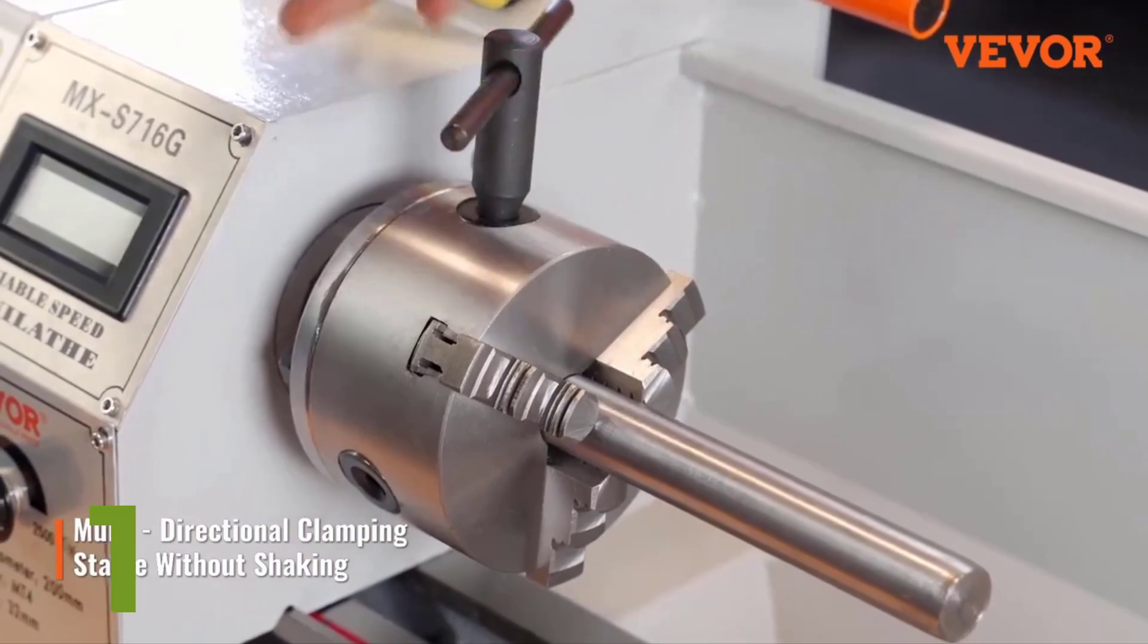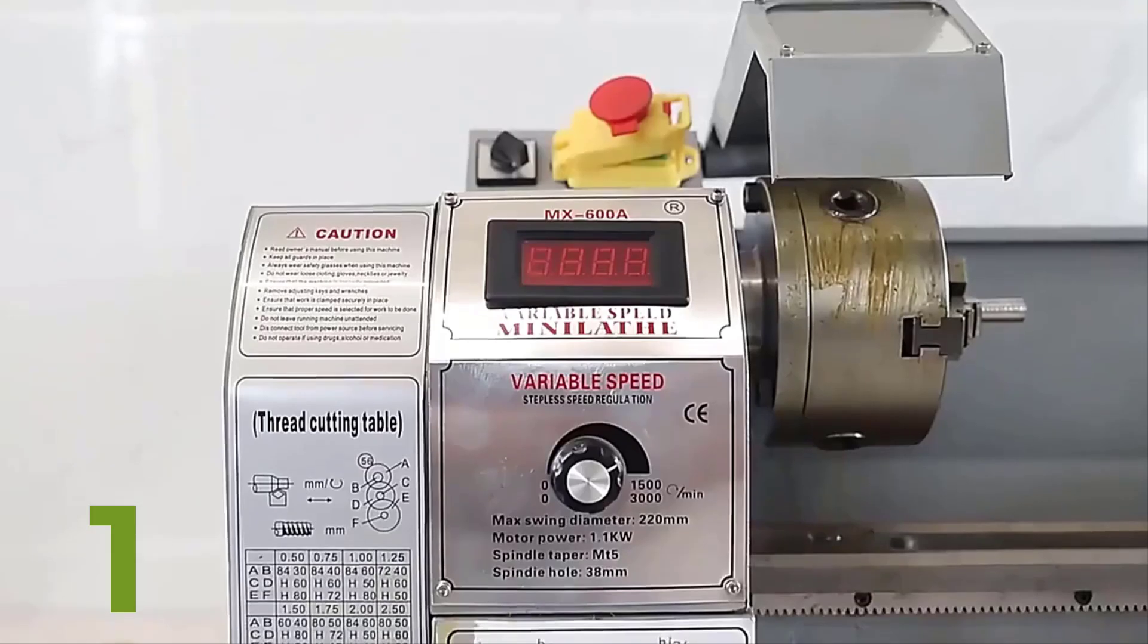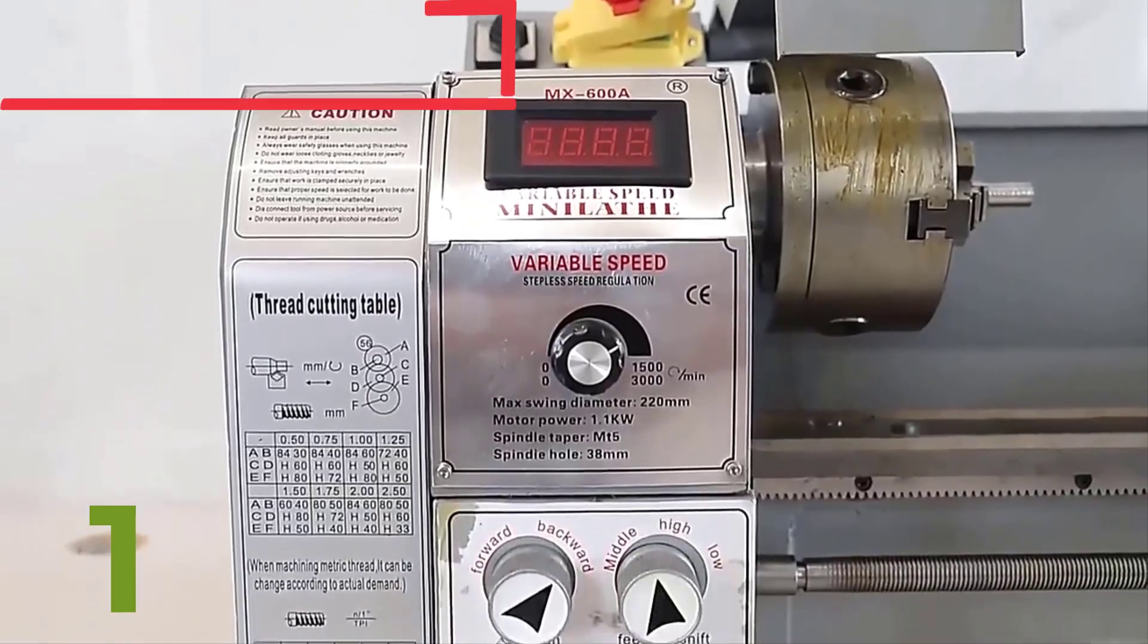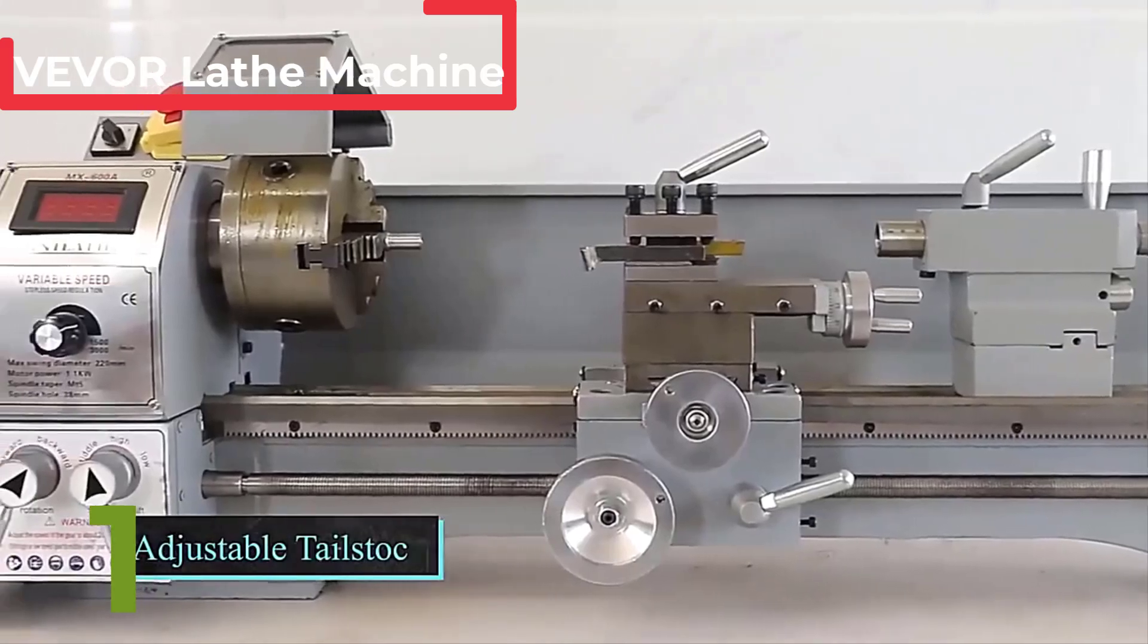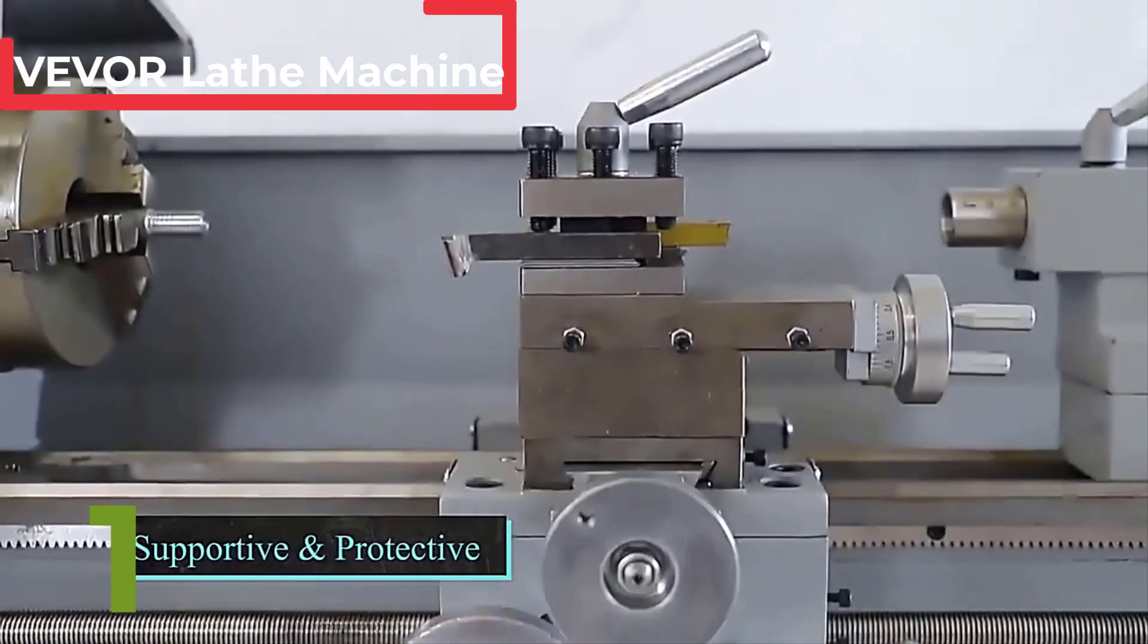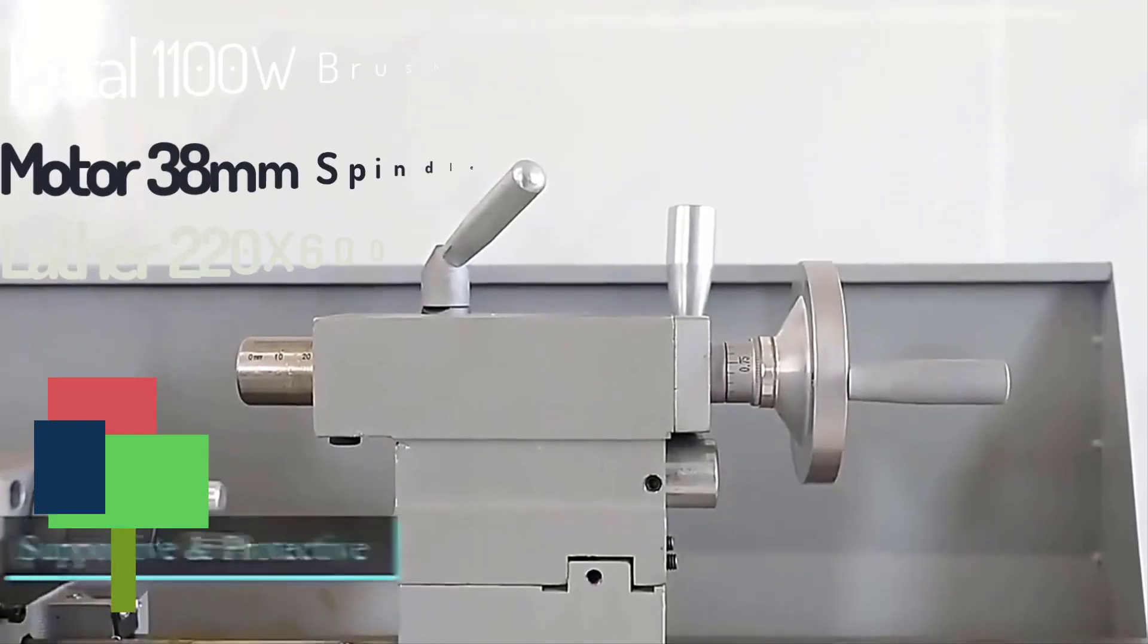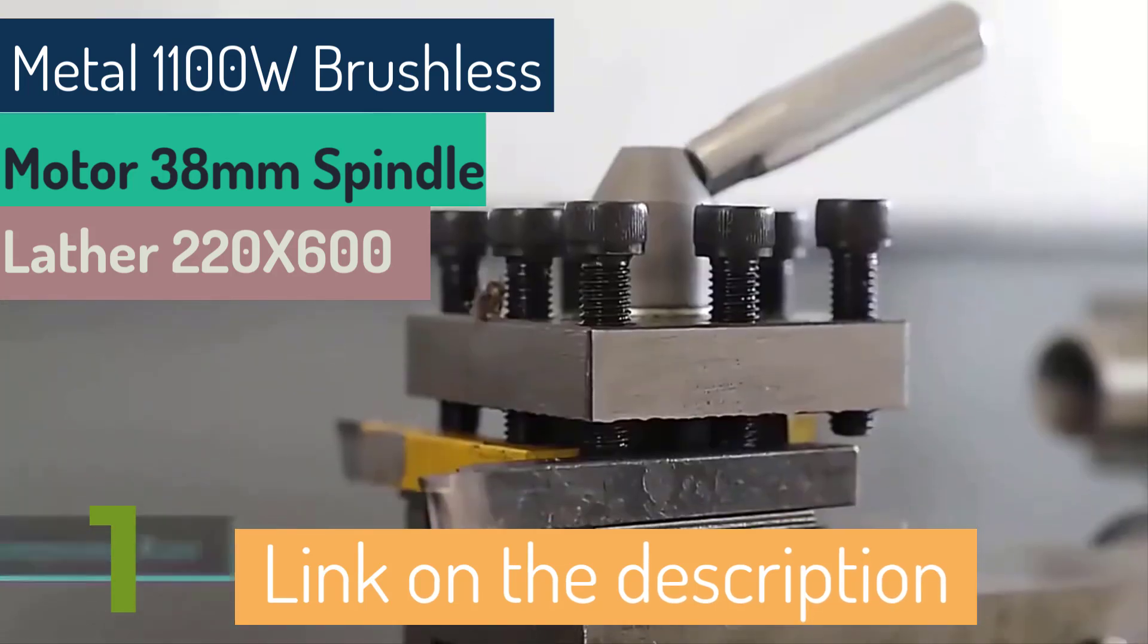The Vivor Lathe Machine Metal is a powerful and versatile tool designed for precision work. With a 1100 watt brushless motor, it delivers reliable performance and a spindle speed range of 50 to 3000 minus 10% RPM. The machine features a swing over bed of 220 millimeters (8.7 inches), and a swing over cross slide of 600 millimeters (23.6 inches).